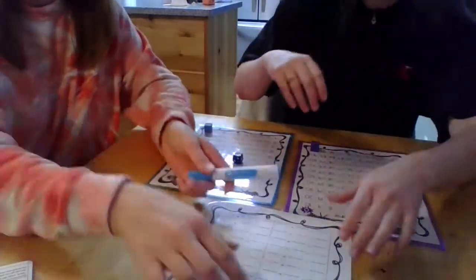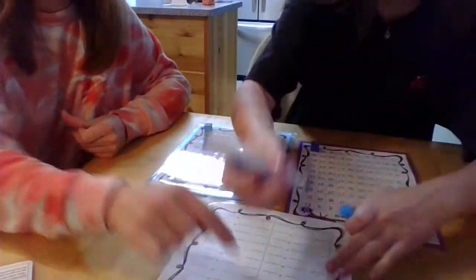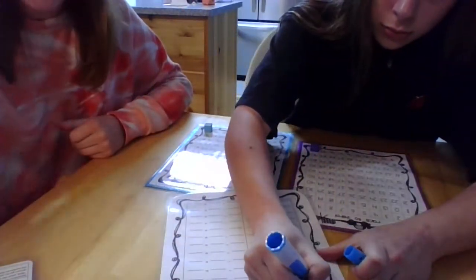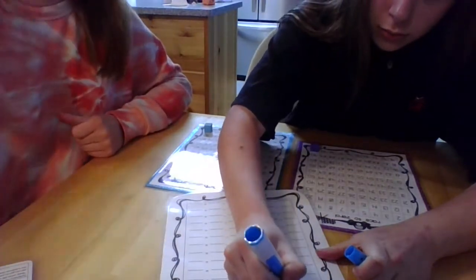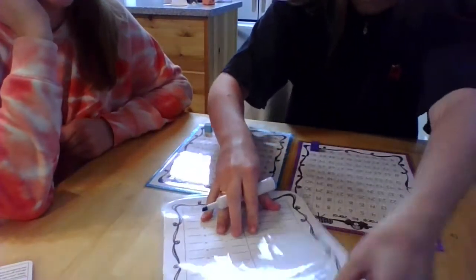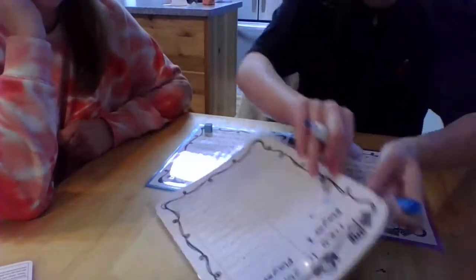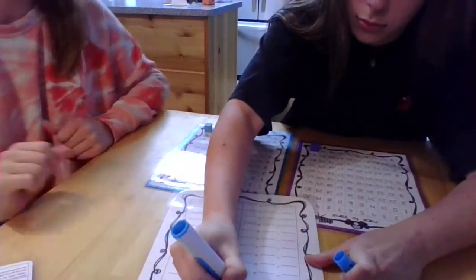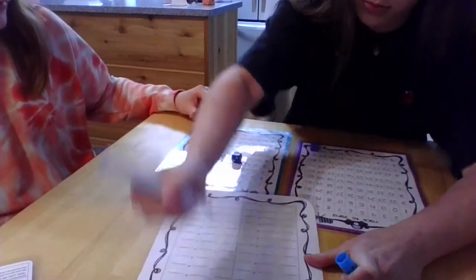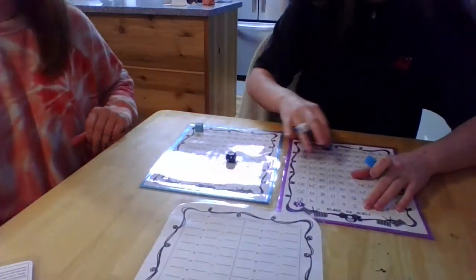And then you're gonna write 100 minus 4 on your player tracking sheet. And then what is 100 minus 4? That is going to be 96. And we'll write that next to the equals. And then move our piece to 96 on hers.